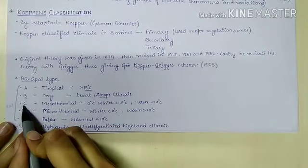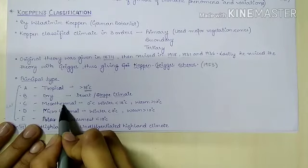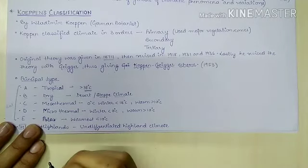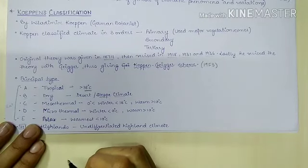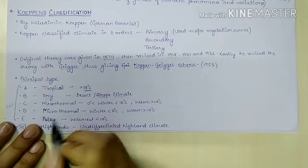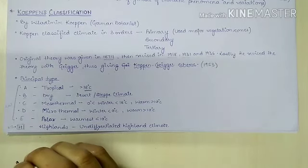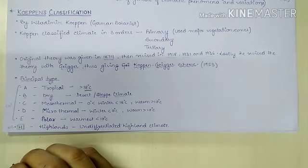Type C is known as mesothermal climate, representing humid mesothermal or mid-latitudinal warm temperate regions with mild winters. The average temperature of the coldest and warmest month is between 8 to 18 degrees Celsius.